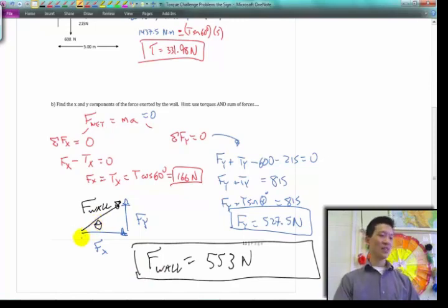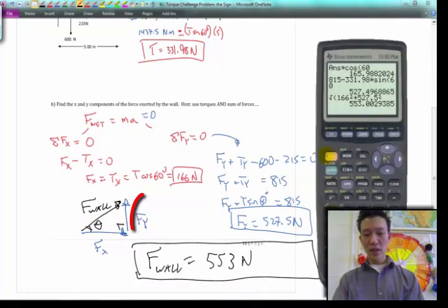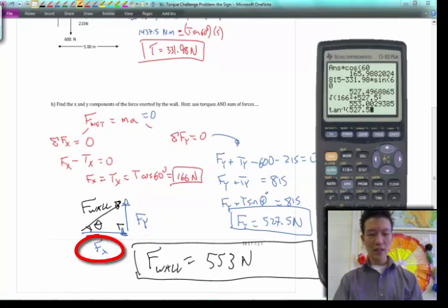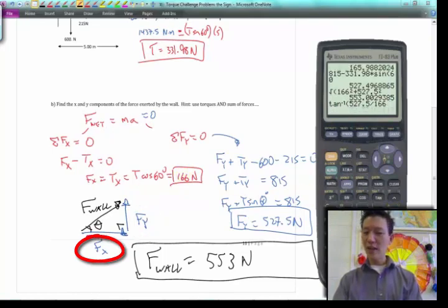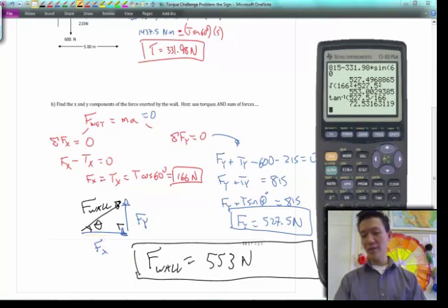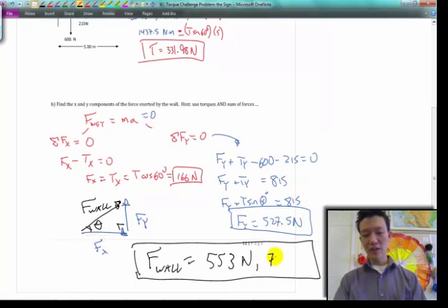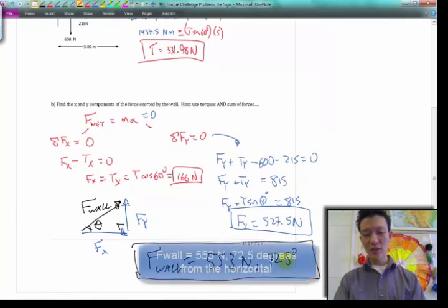a force is a vector, right? It has size and direction. I could find that angle theta. I could use the inverse tangent function. I could do inverse tangent of opposite side over adjacent side. So, that would be inverse tangent of 527.5 over the x component of 166. And I get a final angle of, like, 72.5 degrees there. So, this angle is about 72.5 degrees from the horizontal.